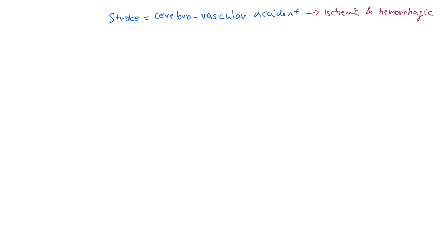Anyway, the two main types are ischemic and hemorrhagic. Which one is most common? Ischemic — and how much? Eighty percent of strokes are ischemic. That's pretty good because you can give them TPA. But you definitely do not want to give TPA to a hemorrhagic stroke.